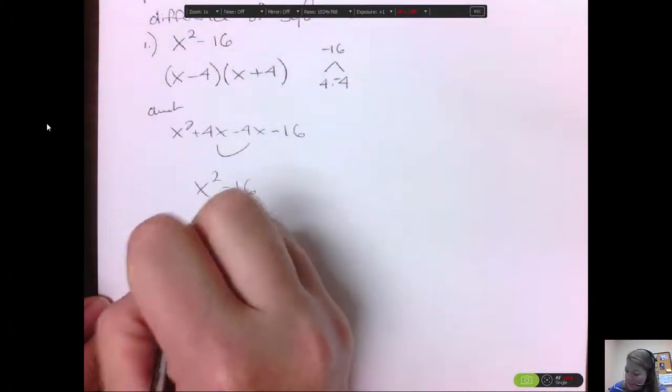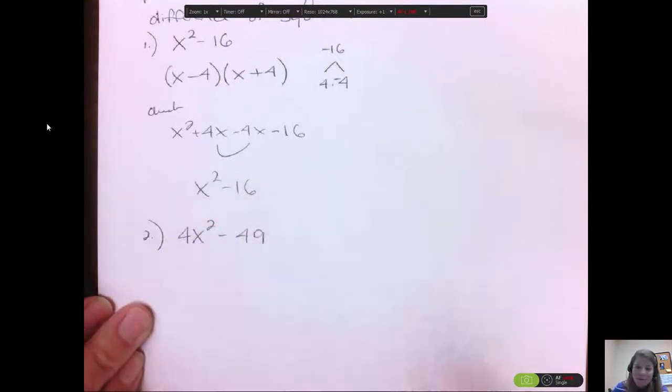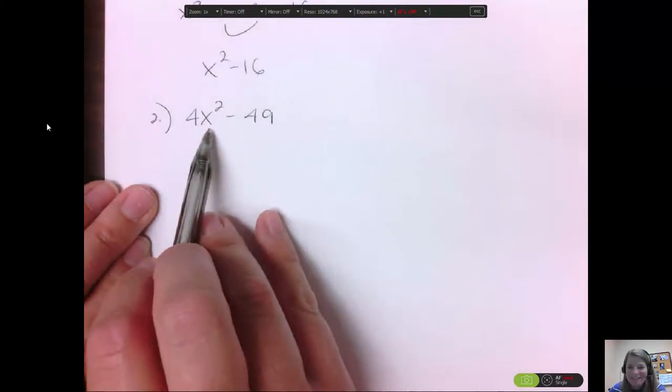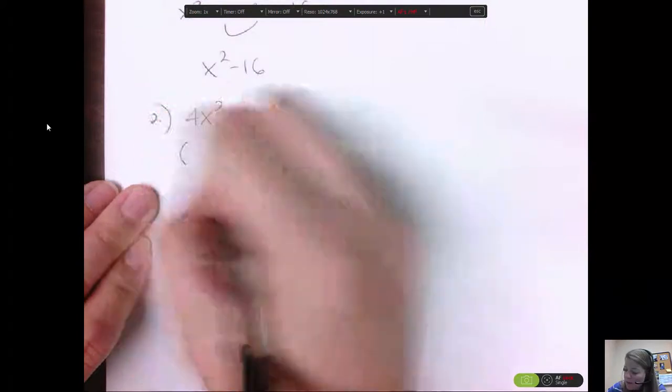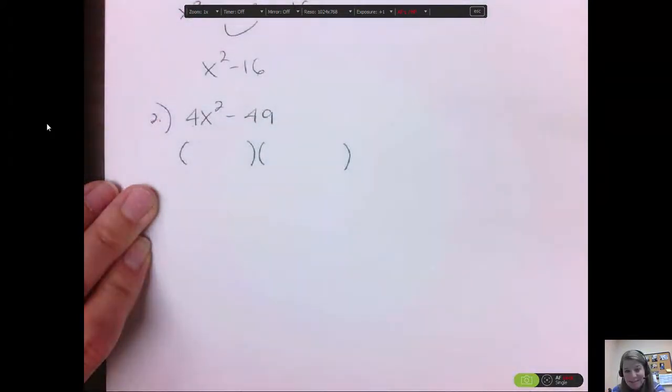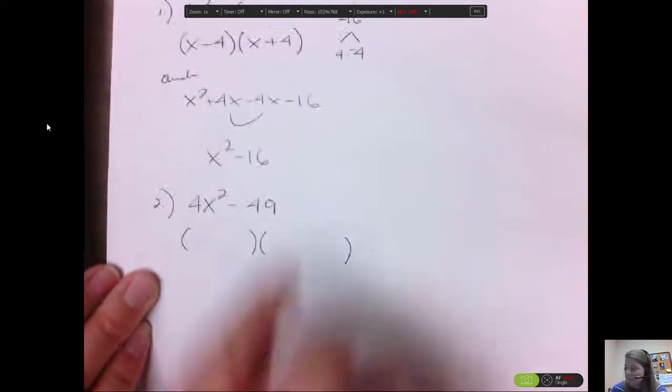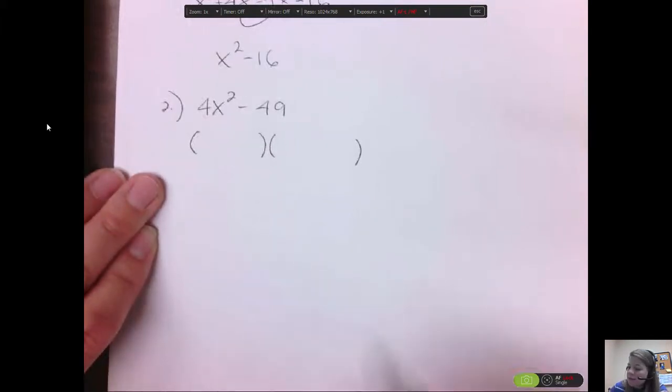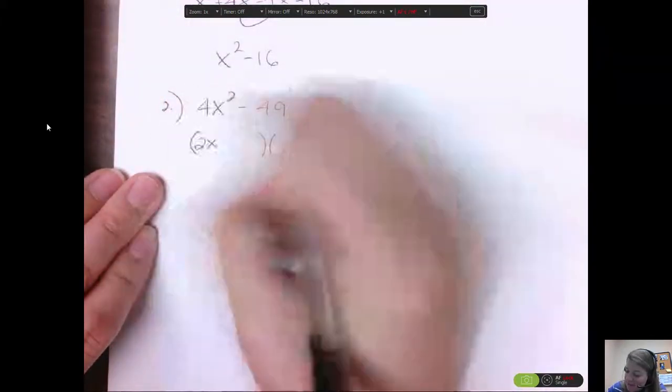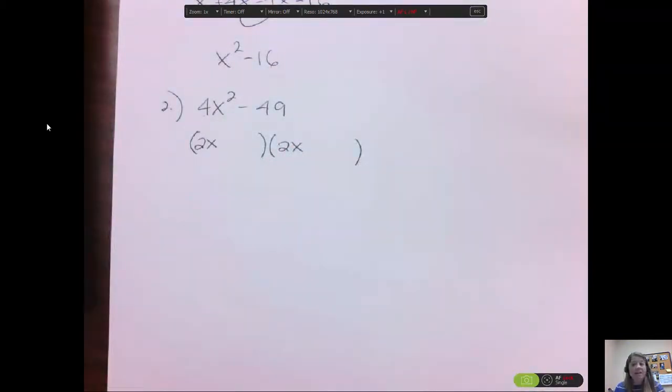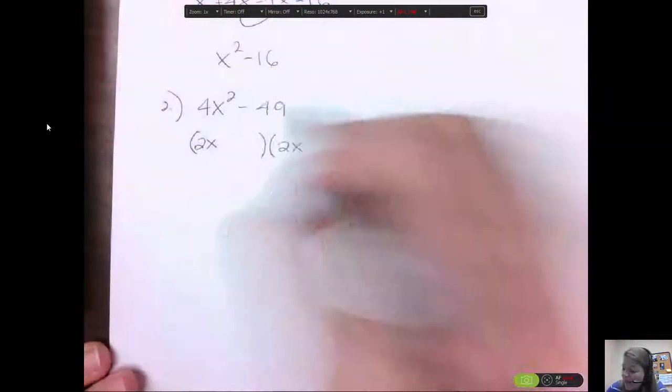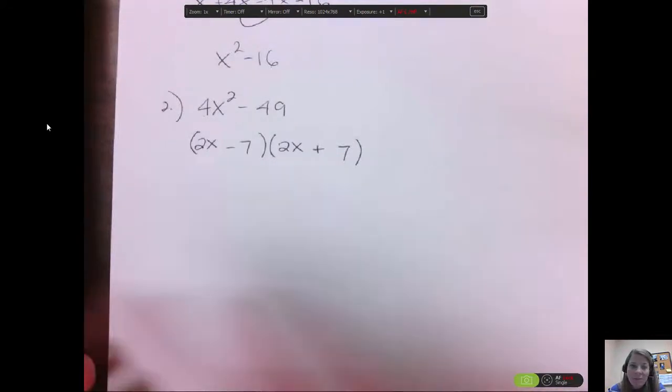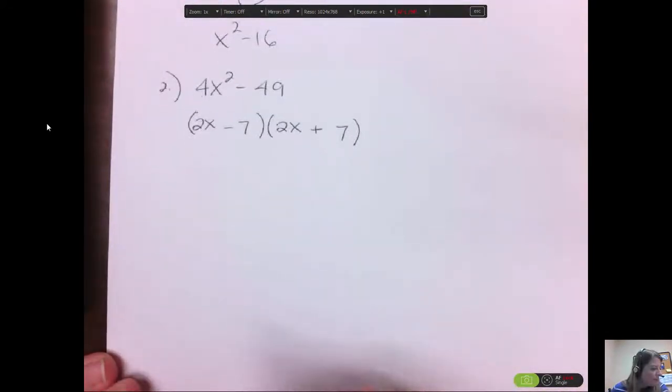So using that idea, what if I have 4x squared minus 49? They're still both difference of squares, but we've now thrown a square in front of the x squared. So what are going to be my parentheses? We know they're going to have to be the same, just like on here, the same parentheses with opposite signs, so that they combine to make the zero in the middle. So the first one, let's think of it as 2x and 2x because we know 2x squared is 4x squared. And then with 49, we know it's going to be 7 times 7, opposite signs. And we can multiply that out and show that it works, and it does.